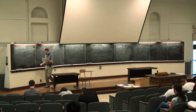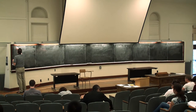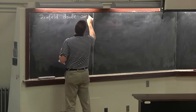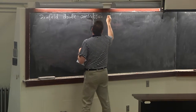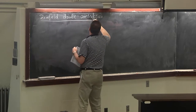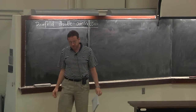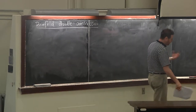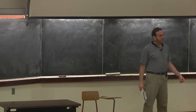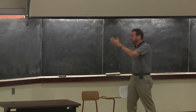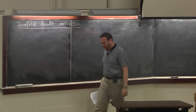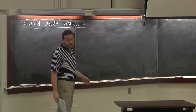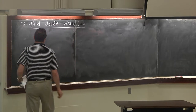In the last lecture, I will explain the Drinfeld double construction for Lie-Bi algebras. This construction is very important because it allows us to construct many examples of Lie-Bi algebras from objects which are much more classical, such as Manin triples. This construction also exists in the quantum world, where it corresponds to an important construction in category theory: the construction of the center of a category. But I will only talk about this for Lie-Bi algebras.